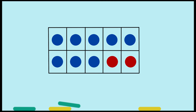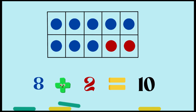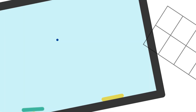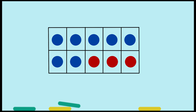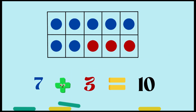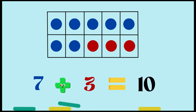Next one — there are eight blue dots and two red dots. Eight blue dots plus two red dots equals 10. Eight and two make 10. Over here there are seven blue dots and three red dots. Seven blue dots plus three red dots equals 10. Seven and three make 10.